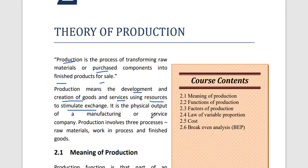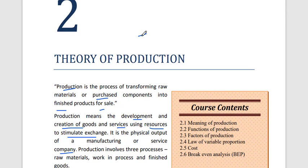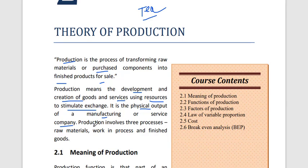It is the physical output of a manufacturing or service company. For example, a tea or coffee industry, or a cricket bat company — they collect all resources like wood, gum, thread, and cutting machinery to process and transform raw material into a cricket bat or hockey stick. So production is the physical output of a manufacturing or service company.